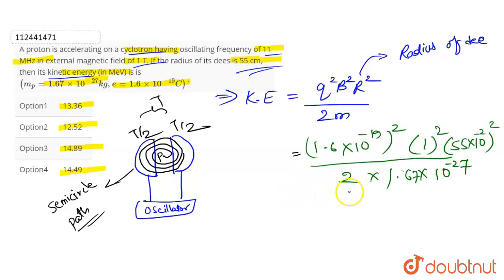Now let us solve this. With the kinetic energy value, it will be 23.19 into 10 to the power minus 13 joules.